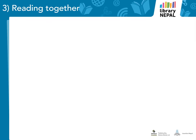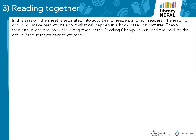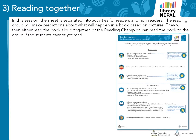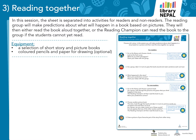Worksheet number 3: Reading together. In this session, the sheet is separated into activities for readers and non-readers. The reading group will make predictions about what will happen in a book based on pictures. The students will then either read the book aloud together, or the reading champion can read the book to the group if the students cannot read yet. For this session, the students need a selection of picture books and short story books and something to draw on. This sheet is divided into two sections: activities for readers and activities for non-readers. You can decide which activities would most benefit your group.